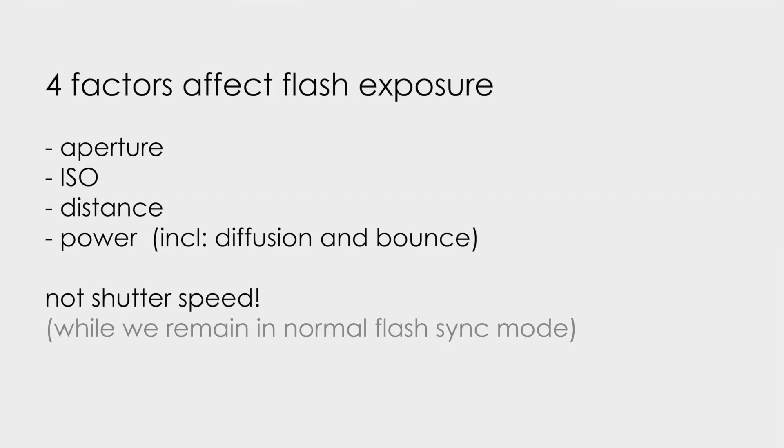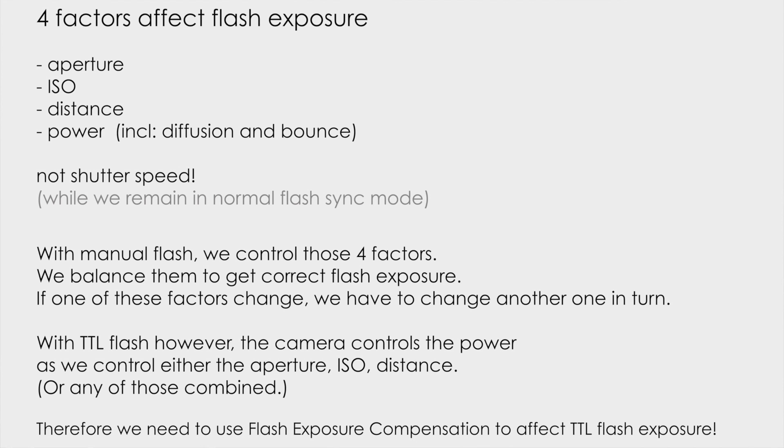This becomes important when you look at what affects ambient exposure. If you photograph landscapes or anything else, it is aperture, ISO, and shutter speed — three things, always has been, probably always will be. With flash exposure, shutter speed doesn't come into play while we're in normal flashing mode. In high-speed sync, this does change — we'll go over that. With manual flash, we control those four factors — PAID — and balance them to get correct flash exposure.